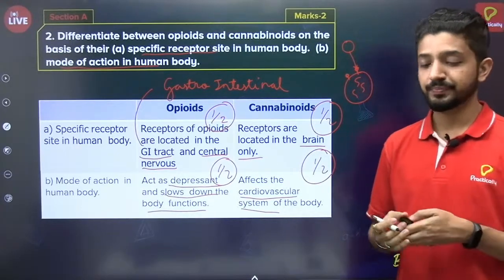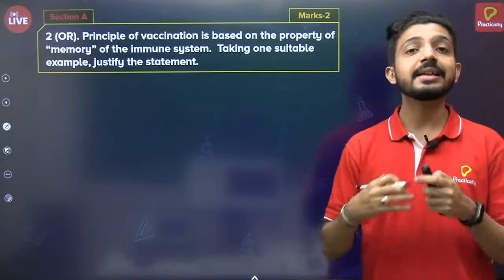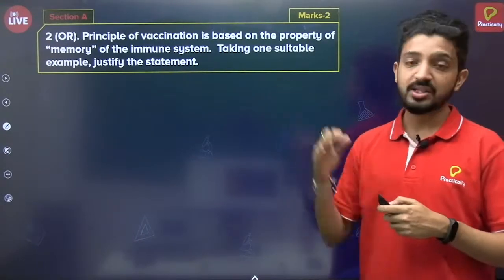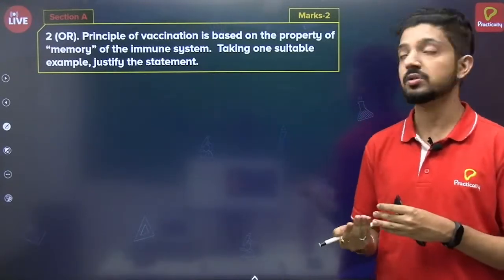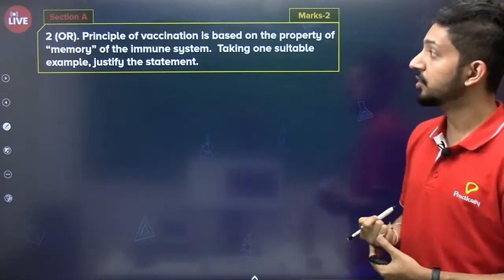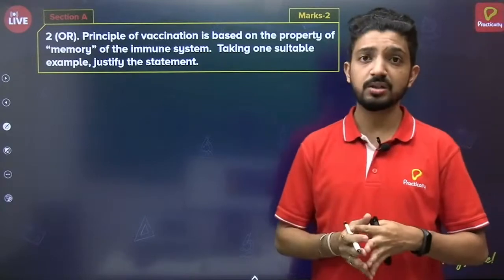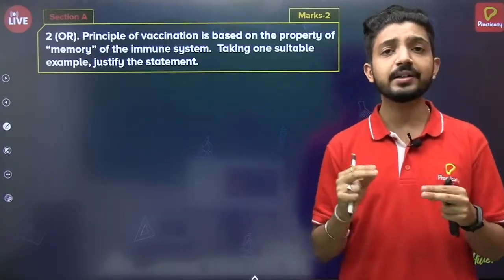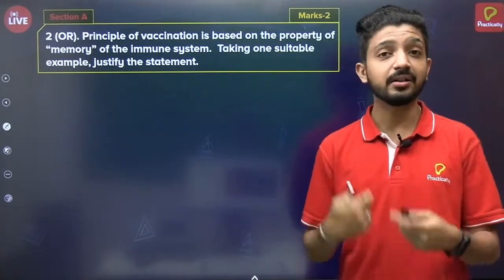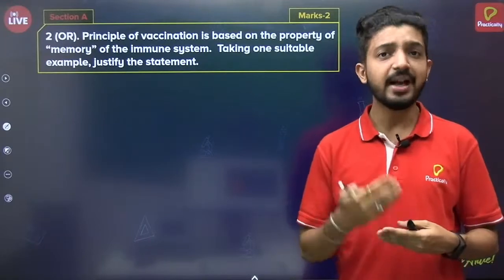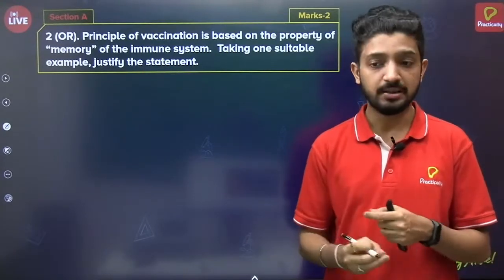This was an easy question from Human Health and Disease. For each part — specific receptor for opioid, effect of opioid, and cannabinoids — each carries half a mark. Now, Question 2 also had an internal option. Since we are discussing the sample paper, I will discuss the OR question too. The question in the option was: The principle of vaccination is based on the property of memory of the immune system — taking one suitable example, justify the statement.